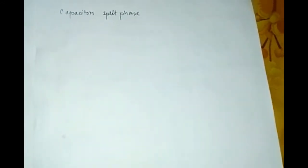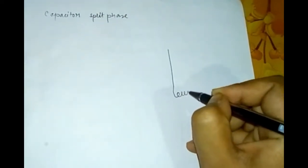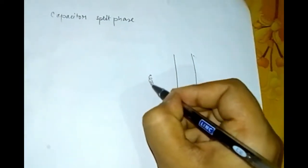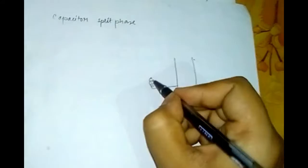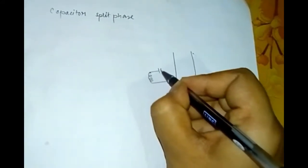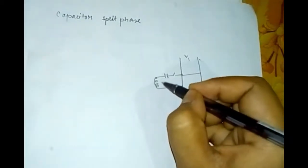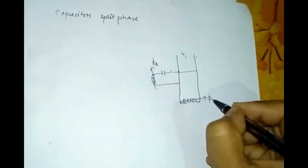Capacitor split phase. In a capacitor split phase motor, there will be a capacitor attached with the auxiliary winding, and in series with it there will be a centrifugal switch. The circuit has a main winding and an auxiliary winding. The supply voltage is connected, the auxiliary winding has a flux phi-a, and the main winding has flux phi-m.